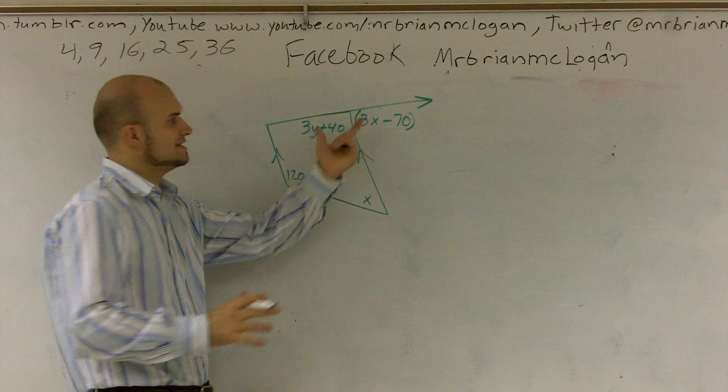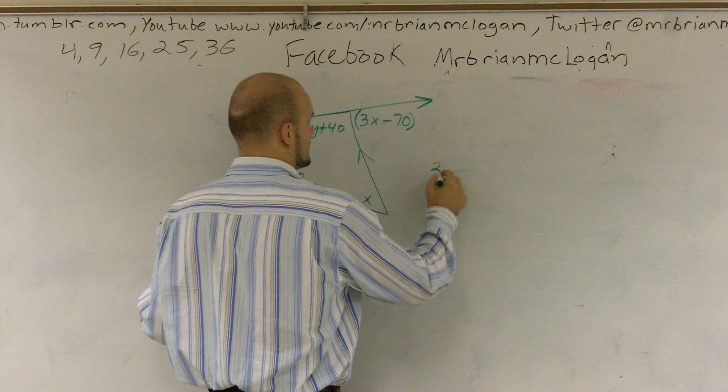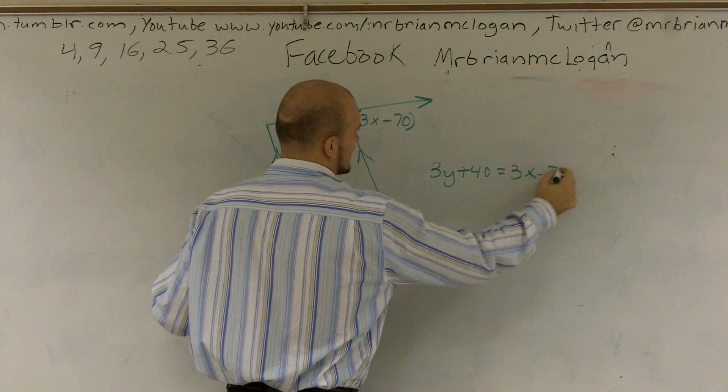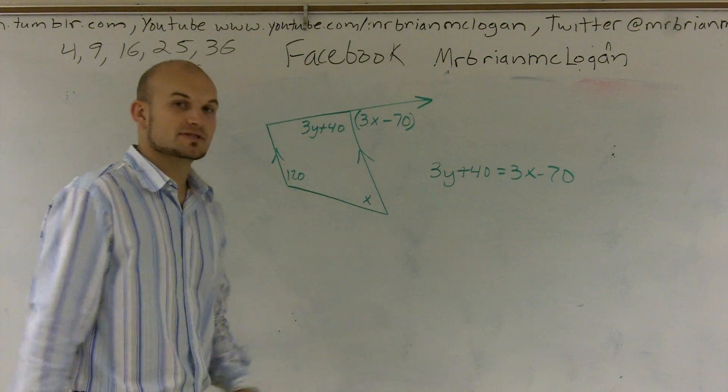I can automatically say that these are supplementary angles. So I could write an equation 3y plus 40 equals 3x minus 70. However, that gives us a big problem, doesn't it?